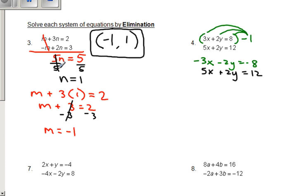Now we've created those opposites that we wanted with the 2y and the negative 2y, so these ones are going to cancel out. Negative 3x plus 5x is 2x. Negative 8 plus 12 is 4. We're going to go ahead and divide both sides by 2. We get x equals 2.